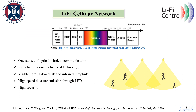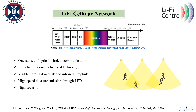Li-Fi is one subset of optical wireless communication which is a fully bidirectional networked technology. It uses visible light in downlink so that the light is used for both illumination and communication purposes. It also may use infrared in uplink. Li-Fi can support high-speed data transmission through LEDs and can provide high security as light does not penetrate through walls. Like other wireless technologies, Li-Fi is also able to support communications for mobile users.